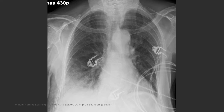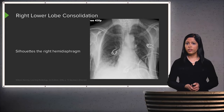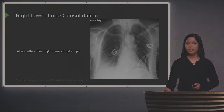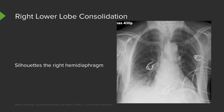This pattern shows silhouetting of the right hemidiaphragm — this is what a right lower lobe consolidation looks like. To differentiate between a right middle lobe and a right lower lobe consolidation on a frontal view: the right middle lobe consolidation will silhouette the right heart border, while the right lower lobe consolidation will silhouette the right hemidiaphragm.